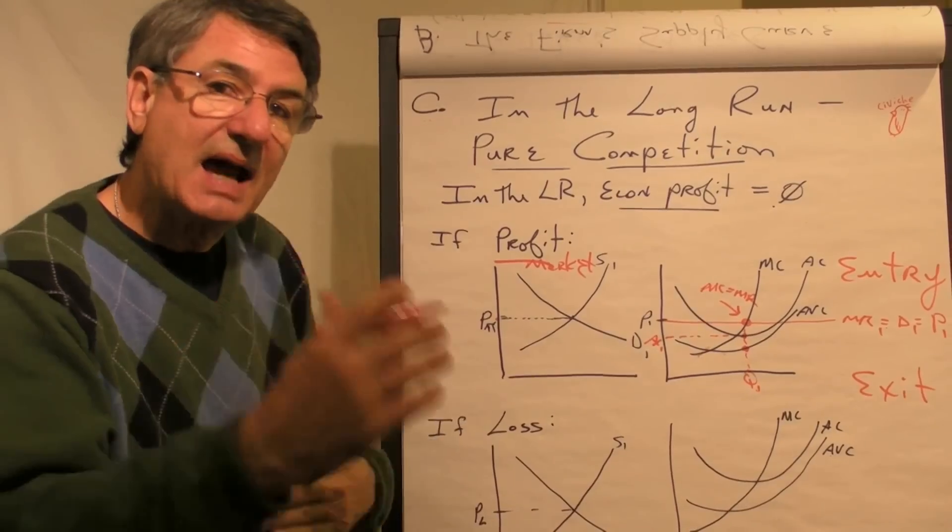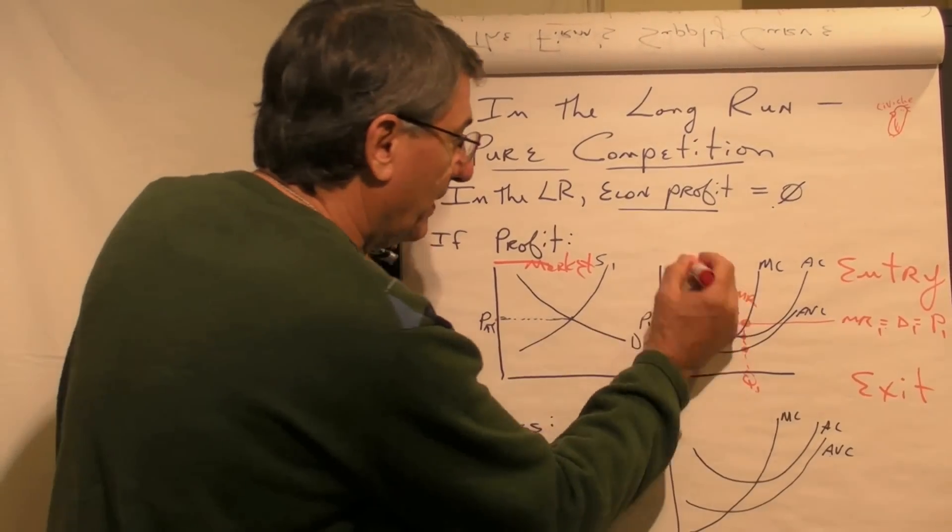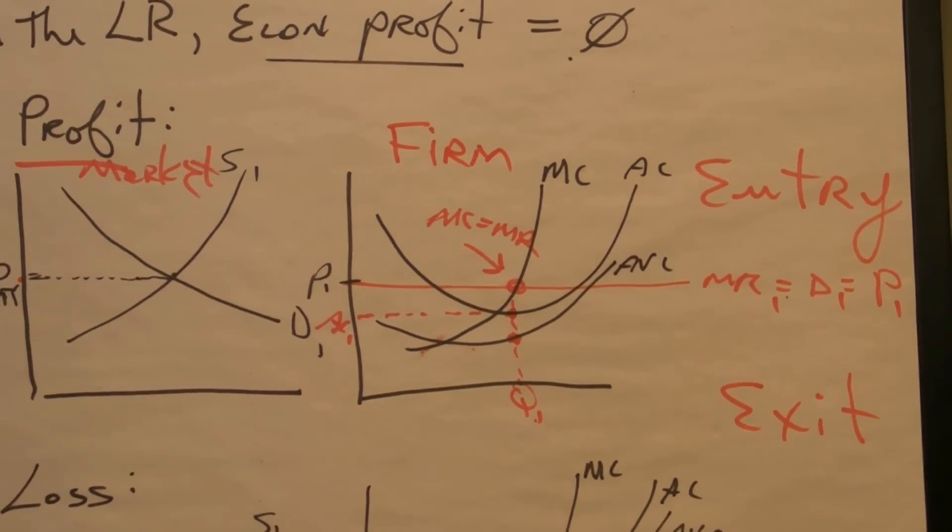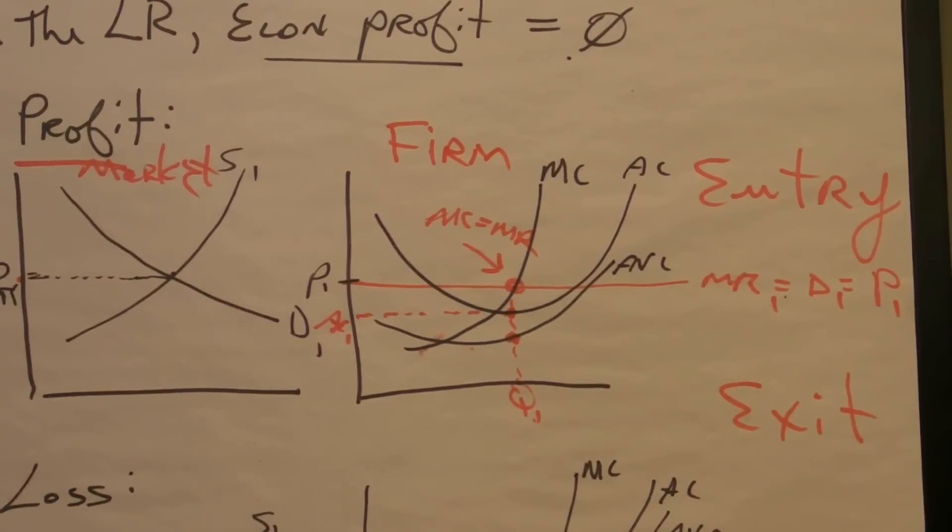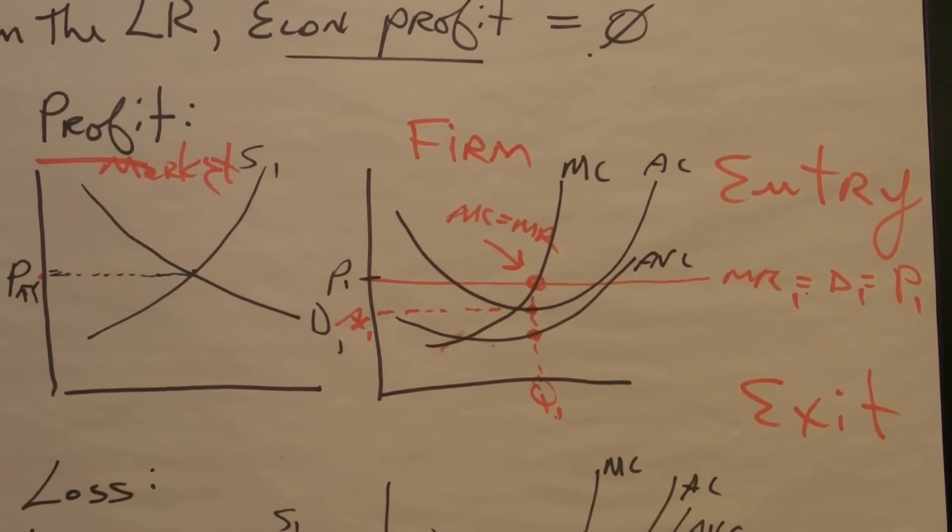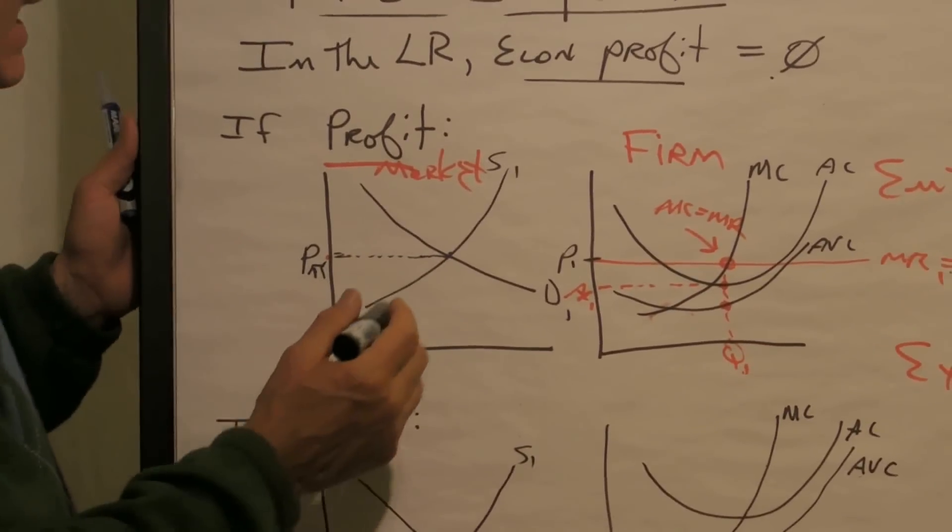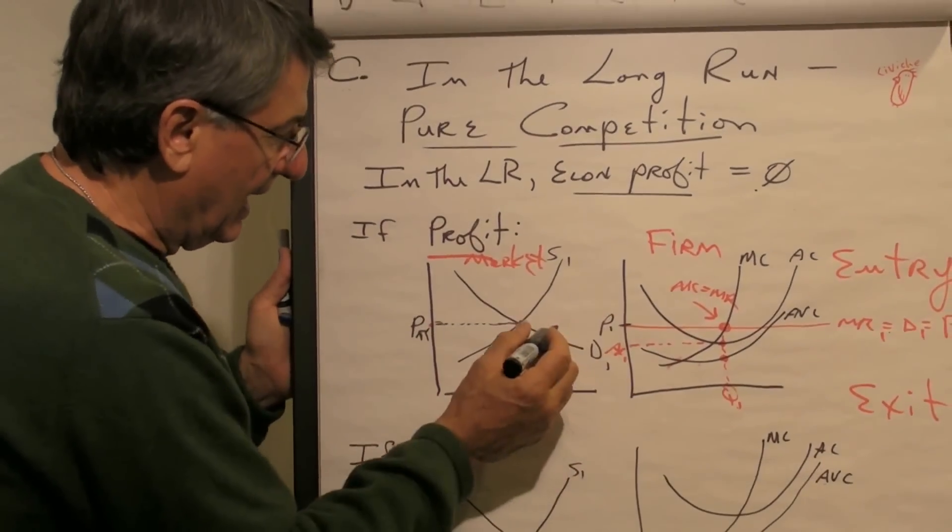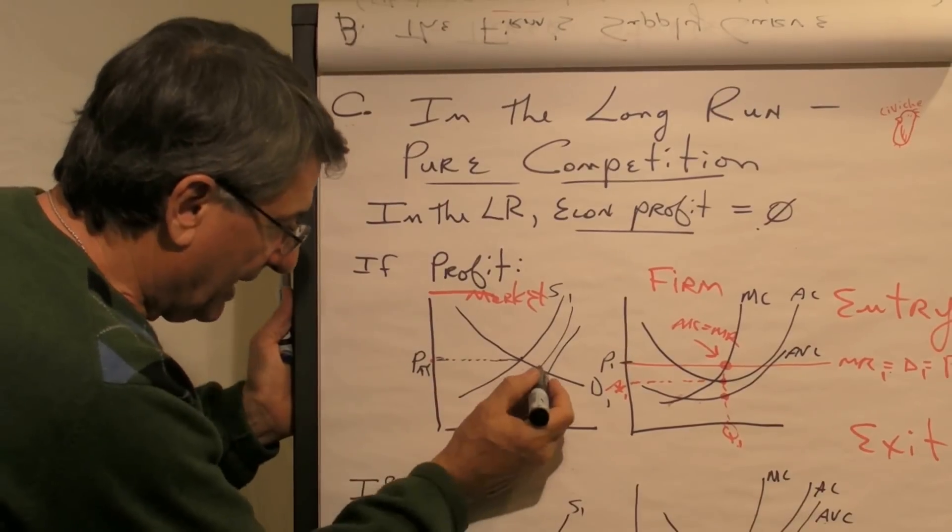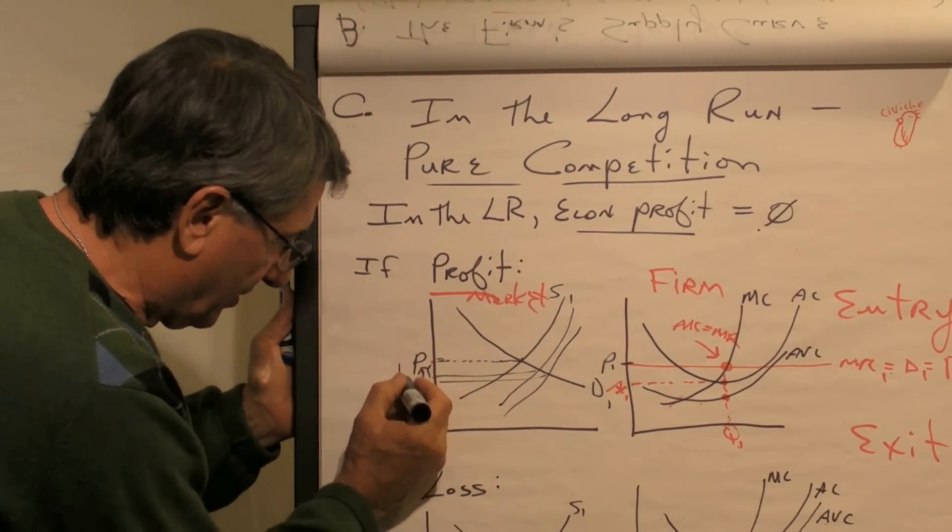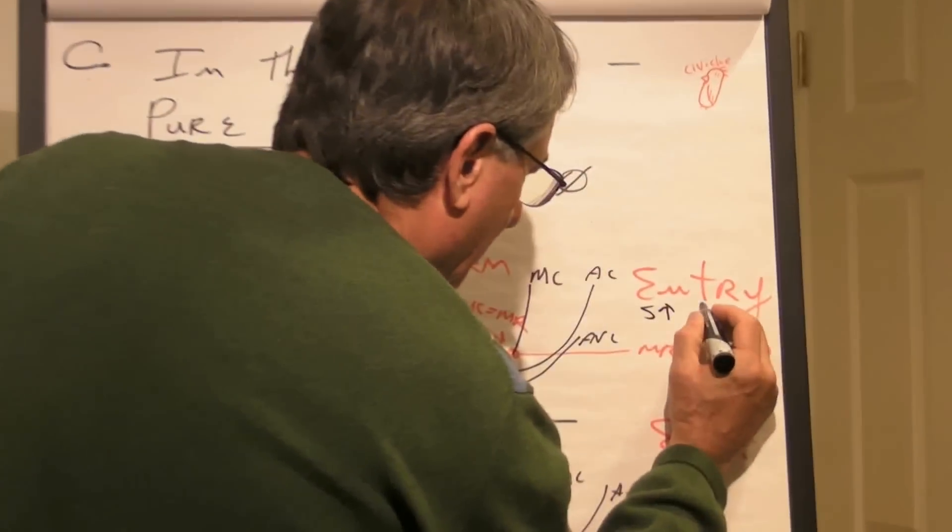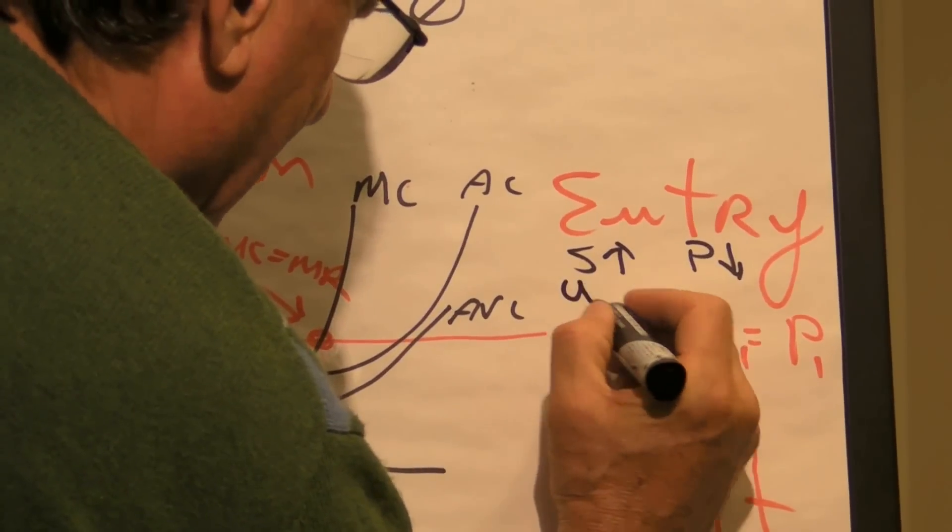Now, when we let time roll, if this is the typical firm making a profit, then when we let time roll, firms will enter—others will enter this industry seeking profits in excess of normal. And when entry occurs, the supply shifts to the right. When the supply shifts to the right, the price in the market goes down. So entry, supply up, price down—until what?